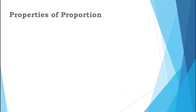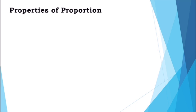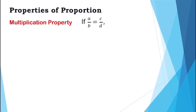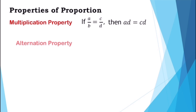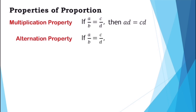Now let's proceed to the properties of proportion. We have the multiplication property: if a over b is equal to c over d, then a times d is equal to b times c. This means the product of the extremes equals the product of the means. Next, we have the alternation property: if a over b is equal to c over d, then a over c is equal to b over d.